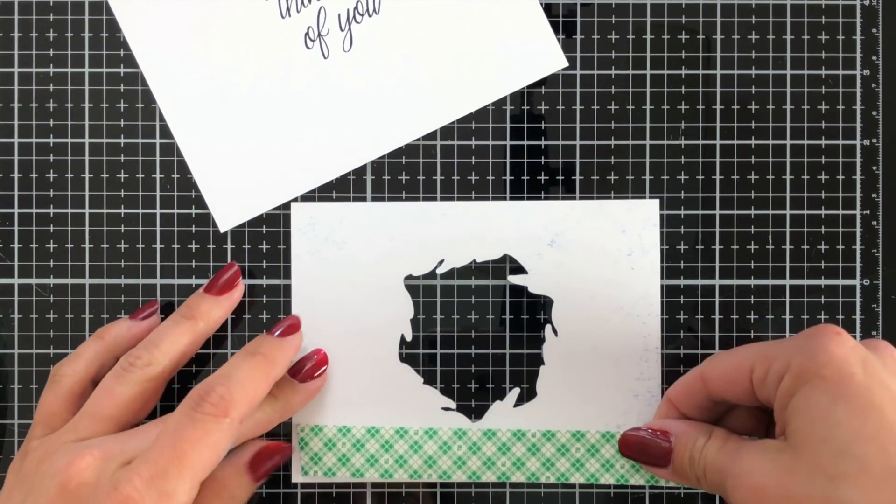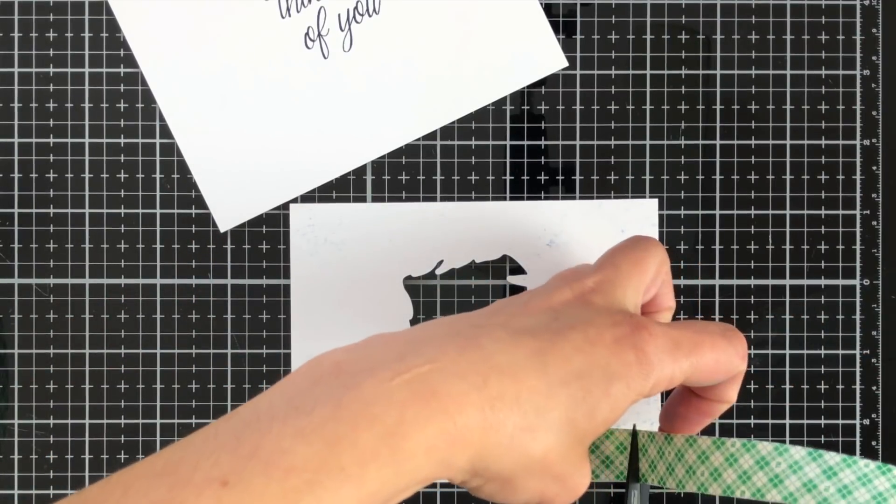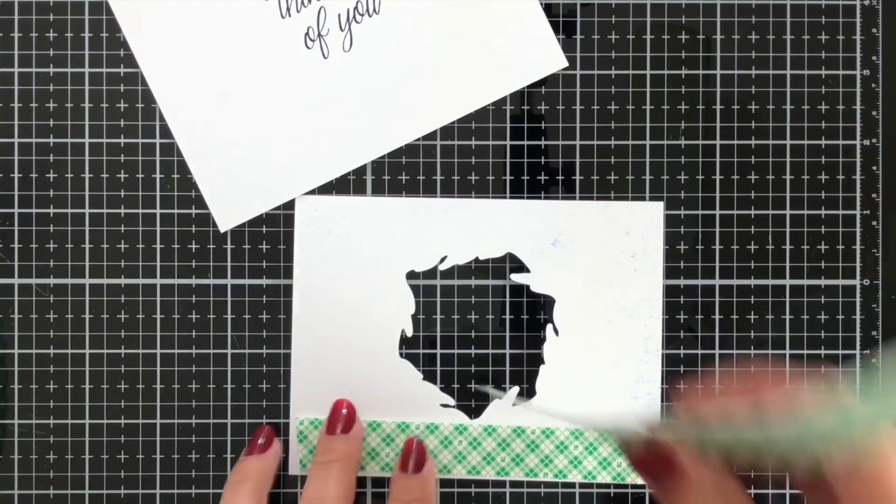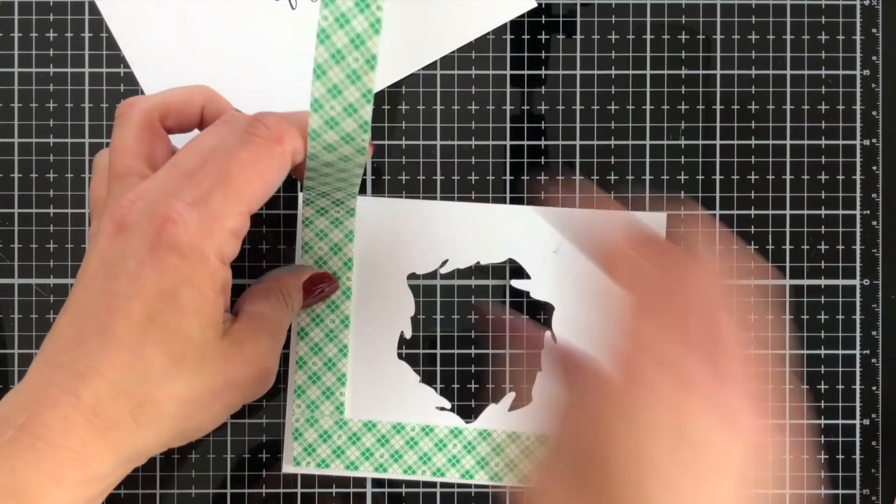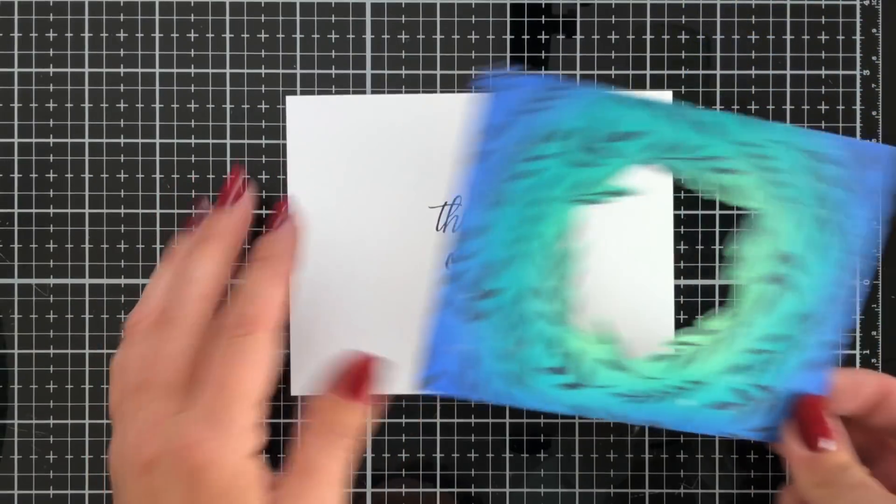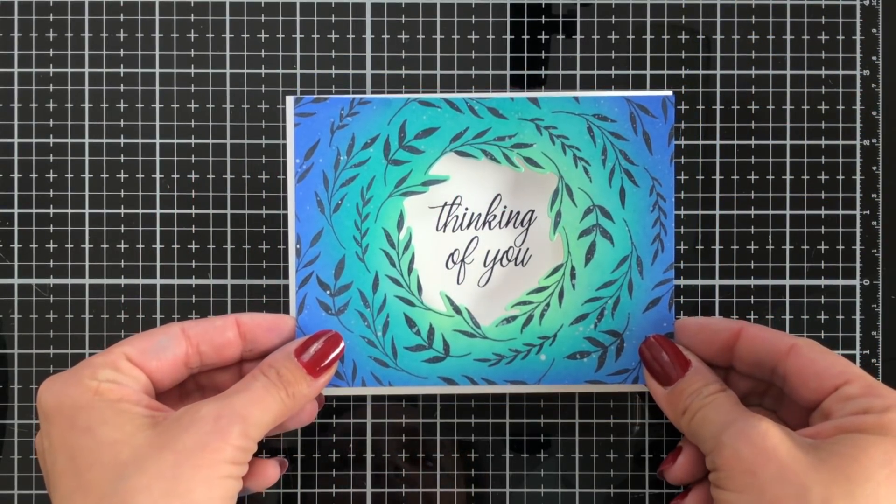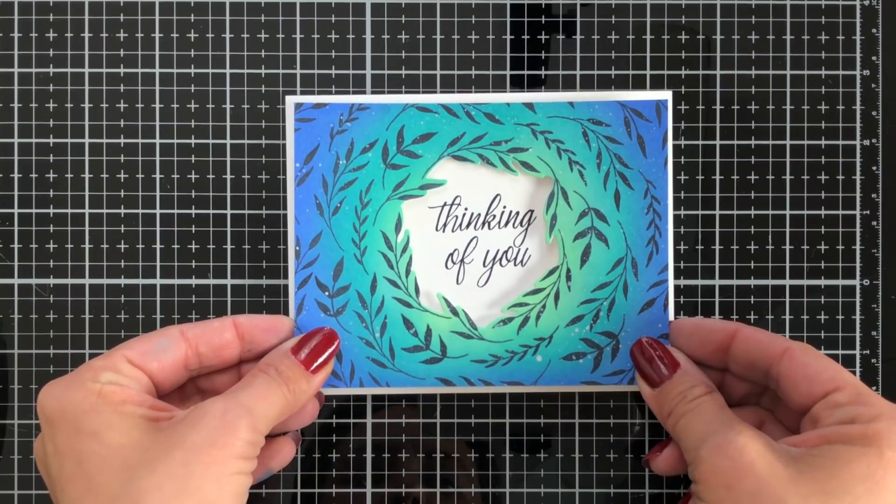So to give my card just a little bit of dimension, I'm going to line the entire back with some foam tape and attach that to my card panel. Now you could also turn this into a shaker card would be an amazing idea to use with this frame set. So once I remove the backing of that foam tape, I'll just line that up. So I have a nice clean white edge around my ink blended panel. And that is going to finish up today's card.